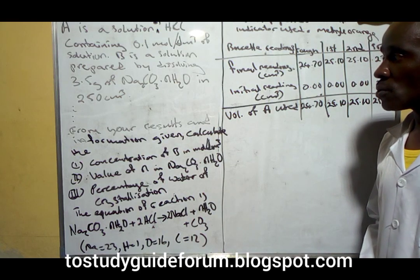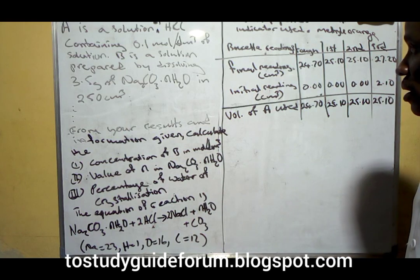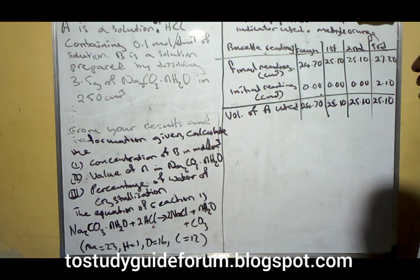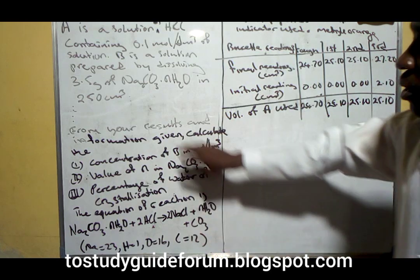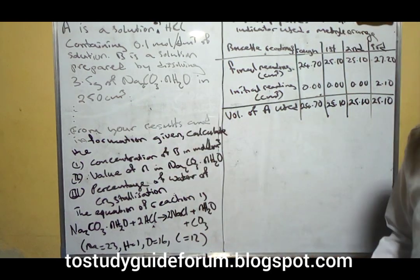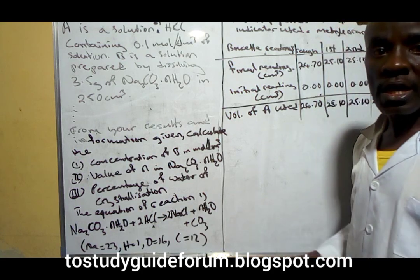B is a solution prepared by dissolving 3.5 grams of sodium trioxocarbonate with water of crystallization n (Na₂CO₃·nH₂O) in 250 cm³.